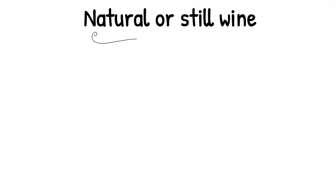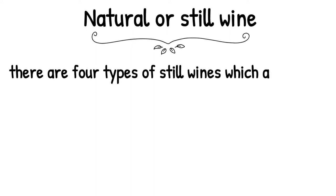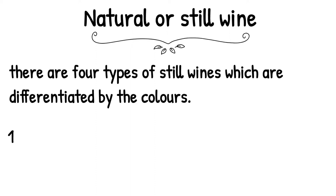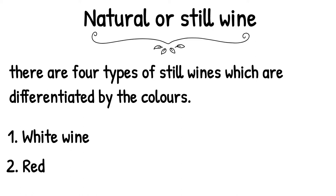Natural or still wine: There are four types of still wines, which are differentiated by their colors. No. 1: White wine. No. 2: Red wine. No. 3: Rosé wine. No. 4: Blush wine. Let's start with white wine.